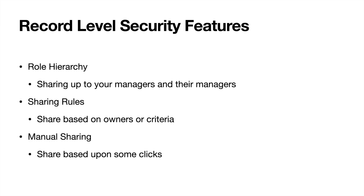The third feature is manual sharing, which is a one-off sharing situation that may not have an automated rhyme or reason. It can be shared with users, groups, roles, and subordinates right from the record page. A good example: if an opportunity is $99,000 — close enough to $100,000 that you need a sales coach — you can manually share it just that one time, even though it doesn't meet the criteria-based threshold.